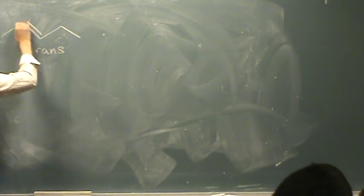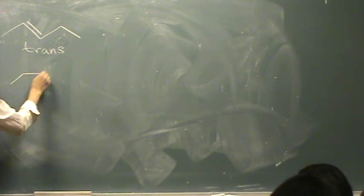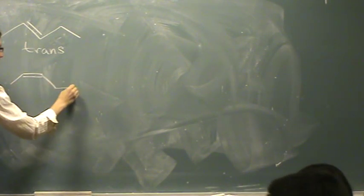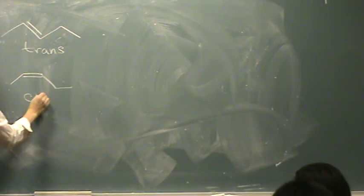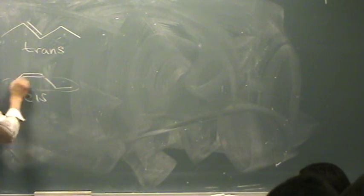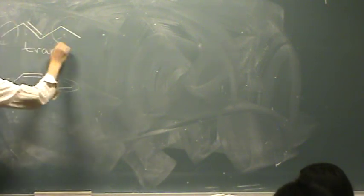So, what's that? Cis or trans? Trans, because they're going the opposite directions. If I wanted the cis, I'd have to draw it like this, where they're both on the same side. So cis is the same side, trans you can see they're on opposite sides.